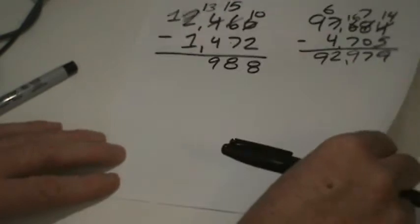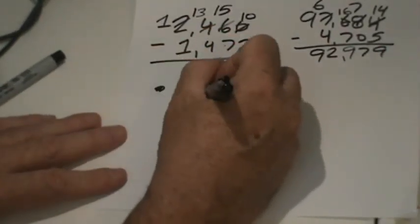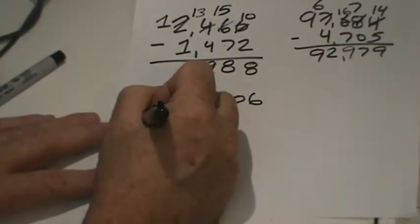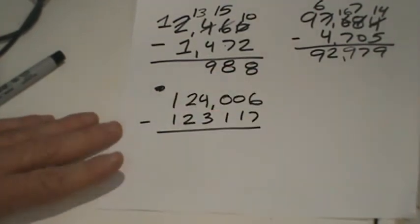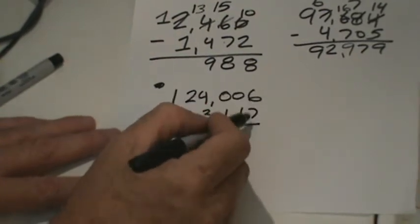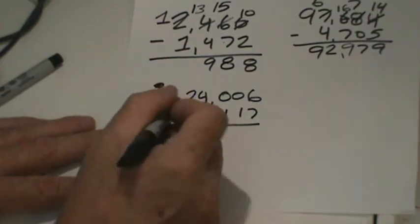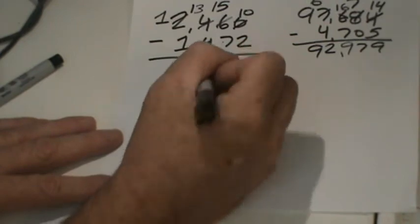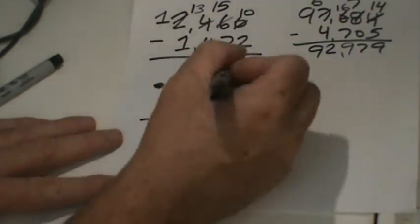Two more to go. G is 124,006 subtract 123,117. We've got a lot going on in this problem. Right away I can't take seven ones away from six ones. There's zero there, zero there. Finally something we can work with — we can decompose. I'm going to start with a thousand: it's going to become three thousands and this is going to become basically ten tens.